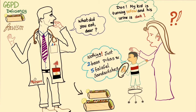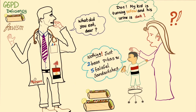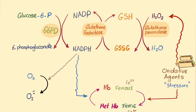The doctor will take the falafel sandwich from the kid and say: 'Stop eating these beans and falafels and you'll be fine, my little boy.' The mother is happy and everyone is fine. Now, pay attention: this kid is yellow because of jaundice, and the urine is dark because of jaundice and the bilirubin in the urine.